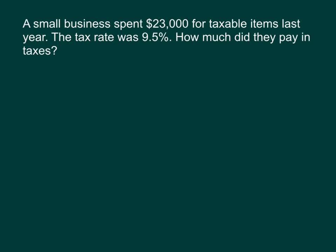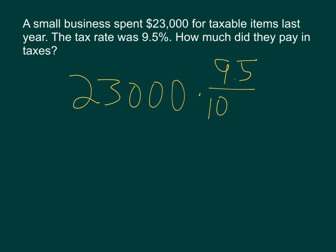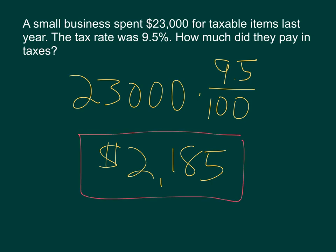The last question says a small business spent $23,000 for taxable items last year. The tax rate was 9.5%. How much did they pay in taxes? Just like the other questions, it's $23,000 times 9.5%, and when you multiply those together you get $2,185. Again, make sure you get the decimal right — it's not 0.95, it's 0.095.